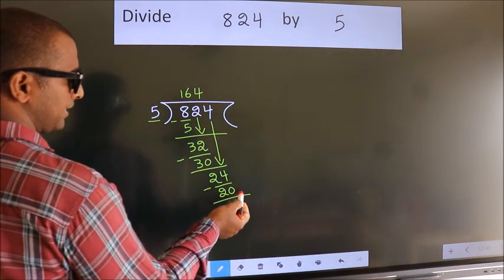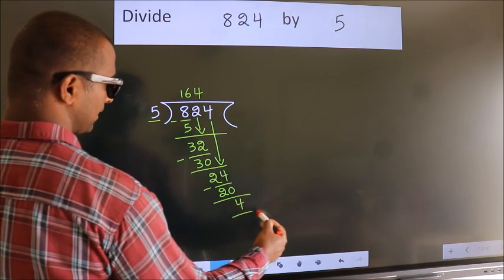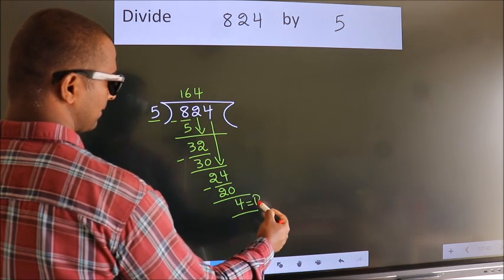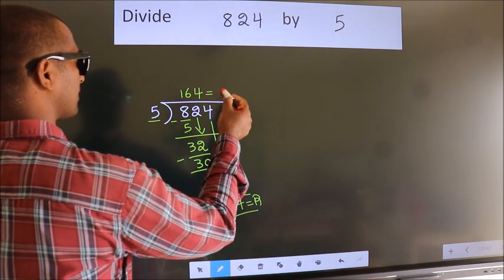No more numbers to bring it down. So, we stop here. This is our remainder. This is our quotient.